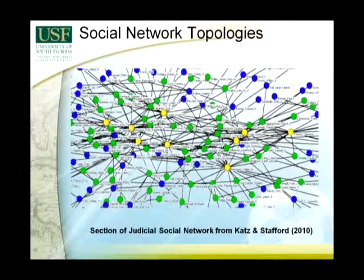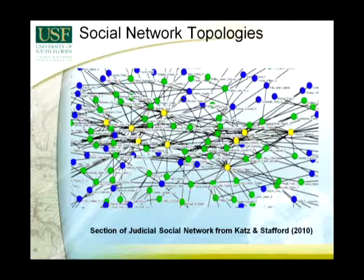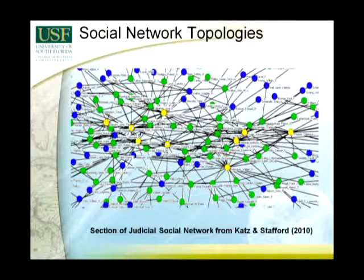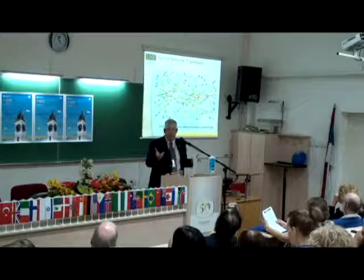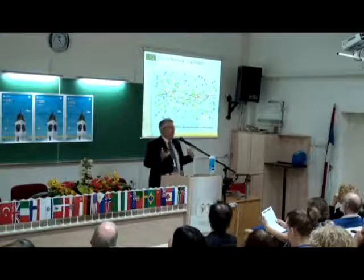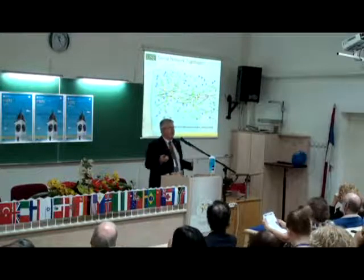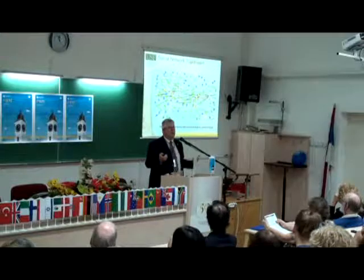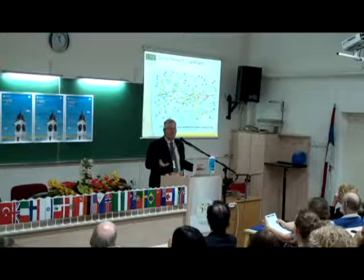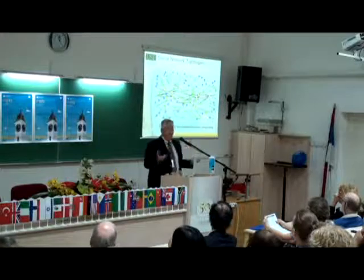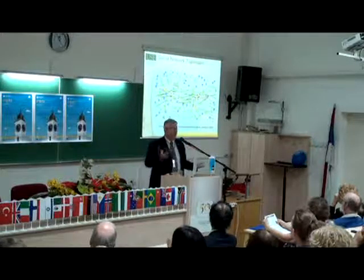Then we move into social network topologies. This is just a section of a judicial social network written by Katz and Stafford in a 2010 paper. All of the people in yellow are Supreme Court justices in the U.S., and then you have circuit court judges and other lawyers. What they were trying to do was determine the connectivity of legal opinions between these things to determine who were the centers of these clusters. This is obviously a very important informing system, and this is an area we ought to be thinking about.